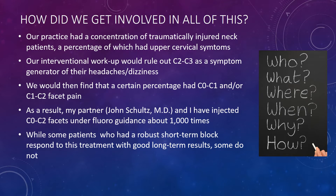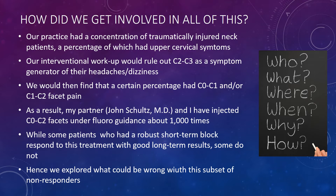While some patients had a good short-term block at C0-C1 or C1-C2 — these are joints in the neck — others would not get better. So we started to ask ourselves: what was going on with these patients? They clearly had upper cervical problems because we could numb out their pain, but they weren't getting better when we injected things like PRP and stem cells into those joints.